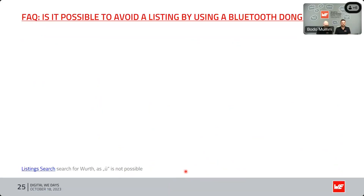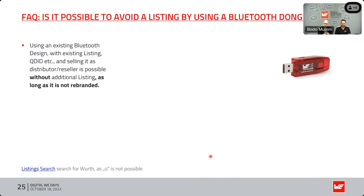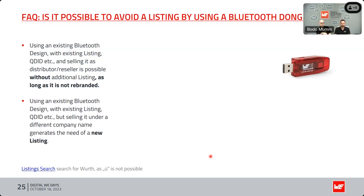Is it possible to avoid a Bluetooth listing by using a Bluetooth dongle? Yes — if you have a USB dongle with our radio module that is certified and qualified, in our housing with our Würth Elektronik mark, and you sell it as a distributor using the existing Bluetooth design and existing listing, it's possible without any listing — as long as it is not rebranded. If you rebrand it with your own company name, you need a new listing because it becomes a new manufacturer, and you must pay the $9,600 for a new listing.